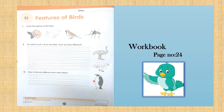Now open your workbook to page number 24. You have to do S1 — features of birds. First, write today's date. Question number one: circle the picture of the bird. Here you can see four pictures — you have to circle the correct one.